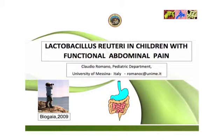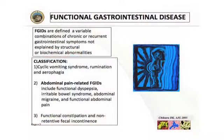Functional gastrointestinal disorders are defined as a variable combination of chronic and recurrent gastrointestinal symptoms, not explained by structural or biochemical abnormalities. We include cyclic vomiting syndrome, rumination and aerophagia, and abdominal pain related to functional gastrointestinal disorders such as functional dyspepsia, irritable bowel syndrome, abdominal migraine, functional abdominal pain, and also functional constipation and non-retentive fecal incontinence.